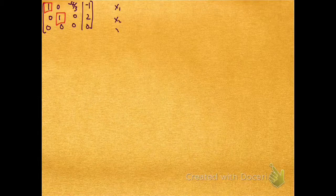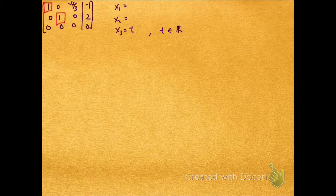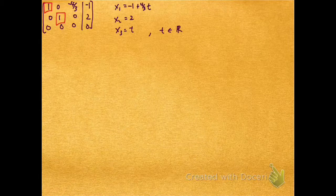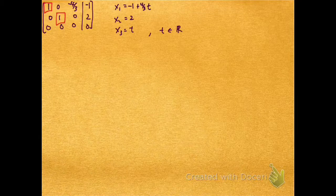So now let me just copy that matrix over again, and I'm going to try to solve. Well, x3 is free, so I call it t for some parameter t, a real number. And I see that x2 has to equal 2, and x1 is -1 plus 4/3 t.